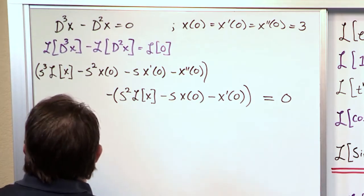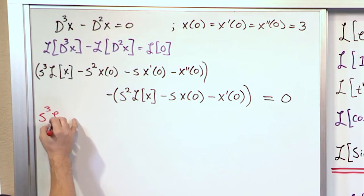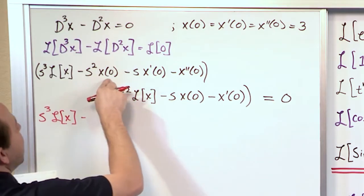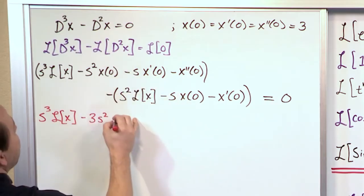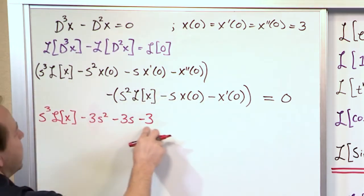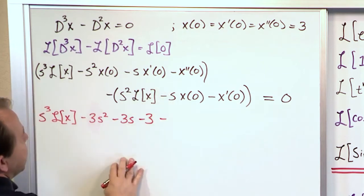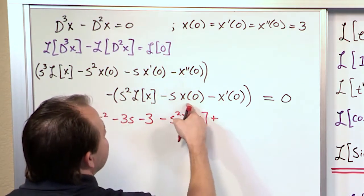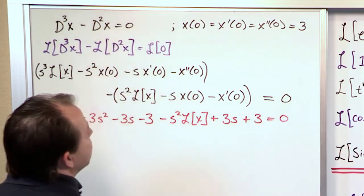Now we need to simplify. We'll have S³ times the Laplace of X. Every initial condition in this problem is equal to 3, so we get minus 3S², minus 3S, minus 3. Then subtracting the second derivative term — pushing the negative in — gives minus S² Laplace of X, plus 3S, plus 3, all equal to 0. Notice that the plus 3 cancels with minus 3, and the 3S cancels with minus 3S.